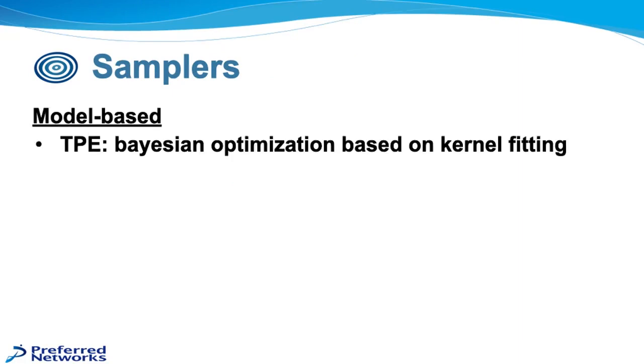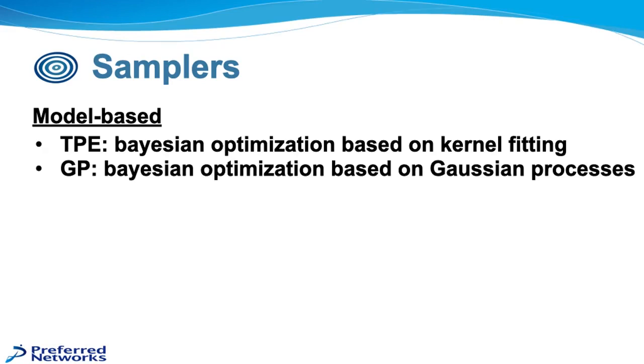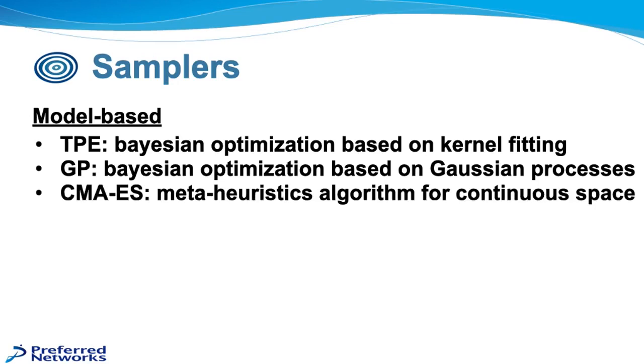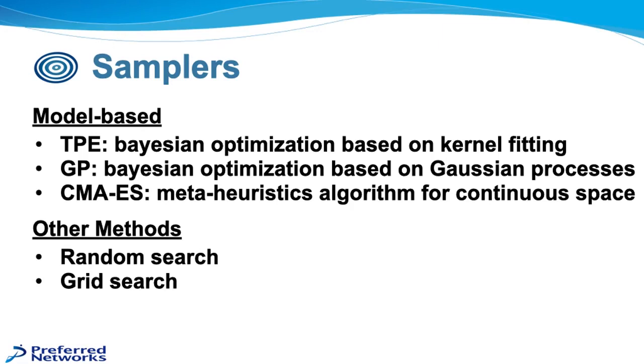So we have several kinds of samplers that are available with Optuna. The model-based ones would be tree-structured Parzen estimator. Don't worry, these names won't be on the test, which is a Bayesian optimization based on kernel fitting. We have Gaussian process samplers, which is also Bayesian optimization, but this time based on Gaussian processes, which has a better ability to find correlations. And then also covariant matrix adaptation evolutionary strategy, which is a meta-heuristics algorithm for optimizing over continuous space and does best for high-dimensional with a large number of trials. There are other methods available as well. If you want to do just a random search that's available within Optuna, or if you want to do a grid search to prove that you've covered the entire space methodically, or also if you want to define your own algorithm to do how the sampling for your particular exercise or algorithm requires.